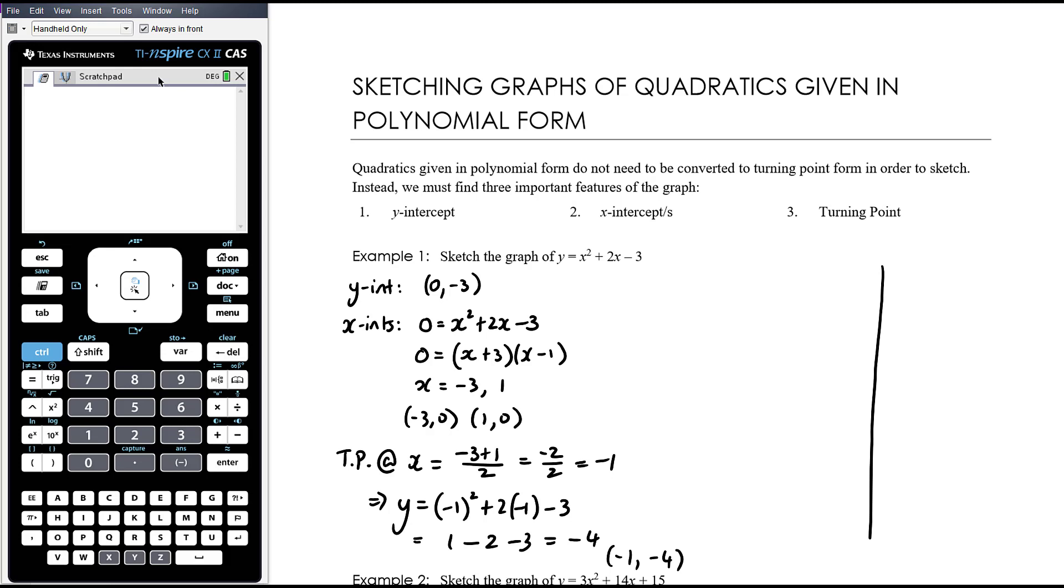We've got our turning point at negative 1 and negative 4. I'm just sort of working out where to roughly place my axes. So it's 1, negative 1, negative 2, negative 3. So we're going to have our x-intercepts. Then we're going to have negative 1, negative 2, negative 3, negative 4. So our turning point is going to be here. Our y-intercept at negative 3, nice symmetric point here just to help us with shape. Make sure all our intercepts and turning points are labelled. And there is our parabola.